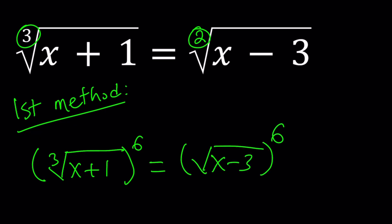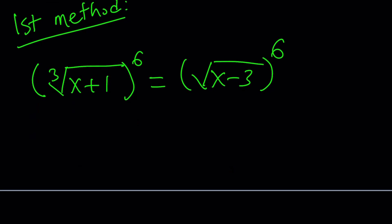We're going to raise both sides to the 6th power like this. When you raise something like cube root to the 6th power, these two are going to cancel out and you're going to end up with a 2 on the outside. And here this is a 2, they're going to cancel out and you're going to end up with a 3 on the outside. So from here we're going to get x plus 1 squared equals x minus 3 cubed.